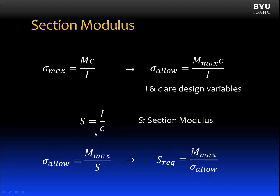So we have two ways of looking at section modulus. Section modulus is equal to the moment of inertia divided by the value c. The required section modulus is equal to the maximum moment divided by the allowable stress — this will be a value we will know for the member we are designing.